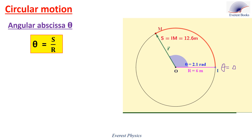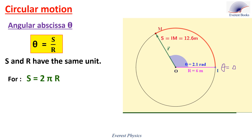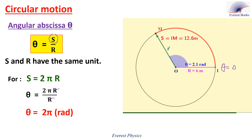Theta is expressed in radians in SI units, and s and r have the same unit. Now, if the particle covers a complete circular path, then the arc length would be equal to 2πr, which is the circumference of the circle. Replacing s by 2πr in the expression theta = s/r, the r's cancel out. Therefore, theta becomes 2π radians, which means that when the particle describes one complete circle, its arc length is 2πr and it describes an angle of 2π radians.